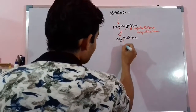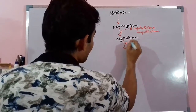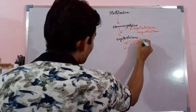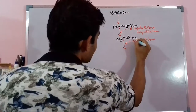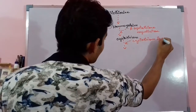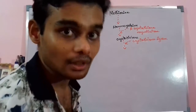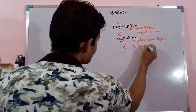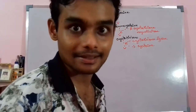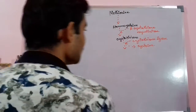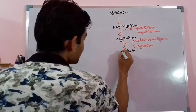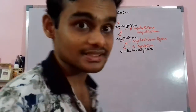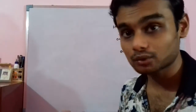Cystathionine, again in the presence of cystathionine lyase — a splitting enzyme that splits the parent product into two or three different daughter products — gives rise to alpha-ketobutyrate with the removal of cysteine. The amine group is completely removed.